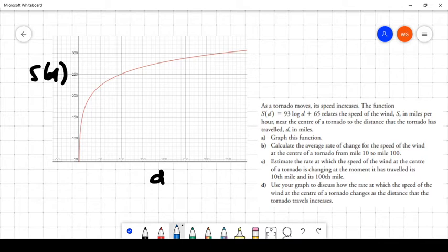Okay, alright, so the first question asks to calculate the average rate of change for the speed of the wind at the center of the tornado from mile 10 to mile 100. So what we're trying to figure out is, on average, at what rate is the speed at the center of the tornado, at what rate is that wind speed increasing per mile over the distance of the 10th mile to the 100th mile traveled?